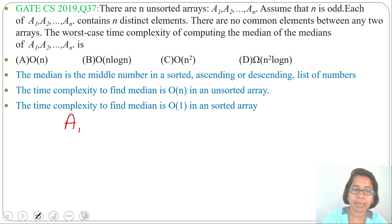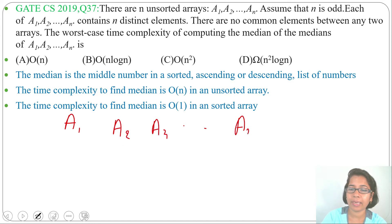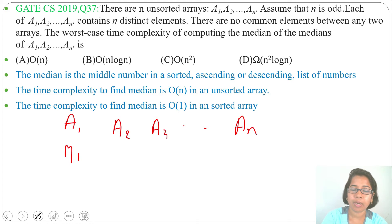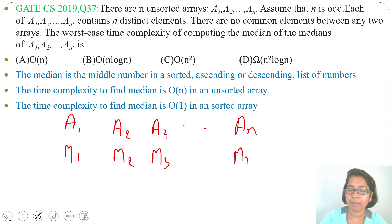The question asks: there are n arrays A1, A2, A3, up to An, and we need to find the median of each array. Let the median of A1 be M1, median of A2 be M2, median of A3 be M3, and so on up to median of An being Mn. Finding each of these medians has a time complexity of O(n).